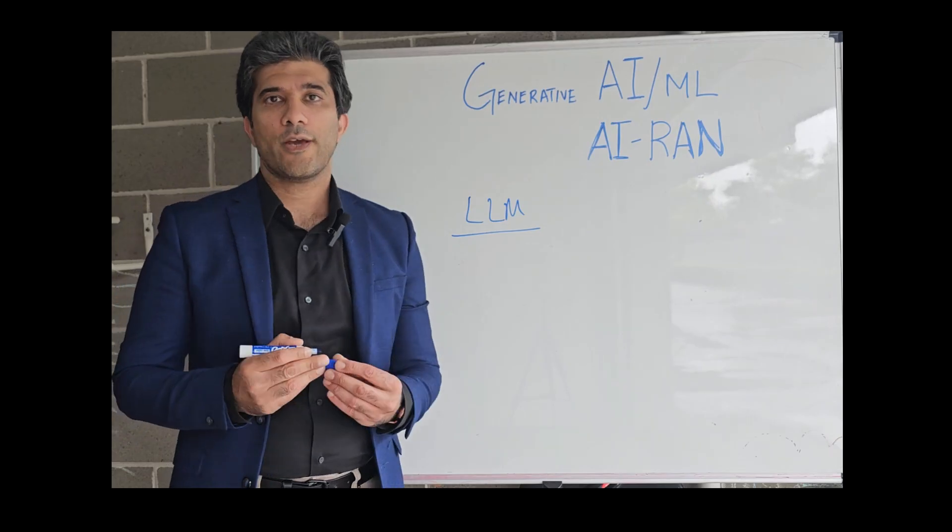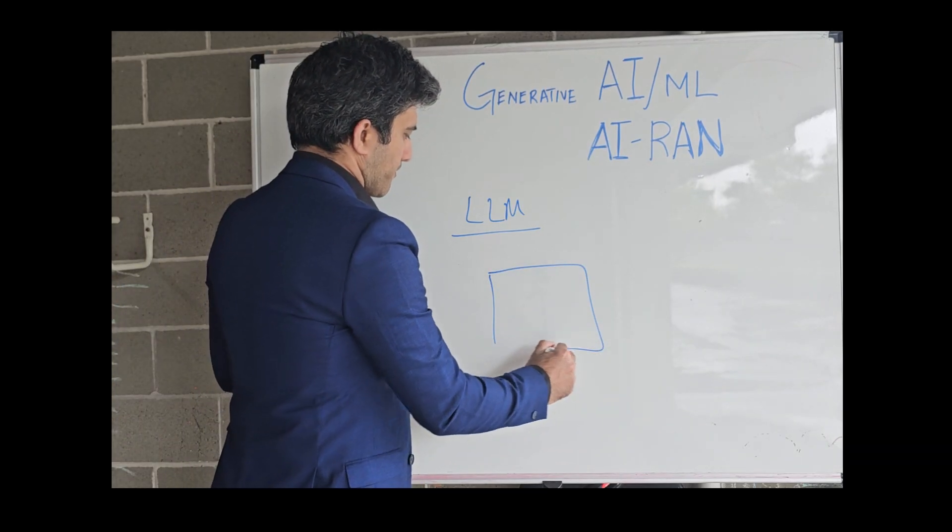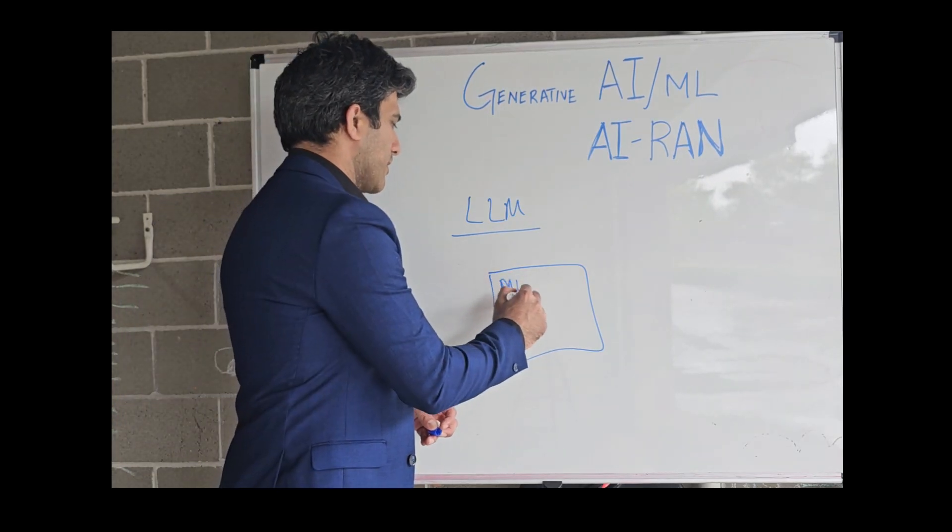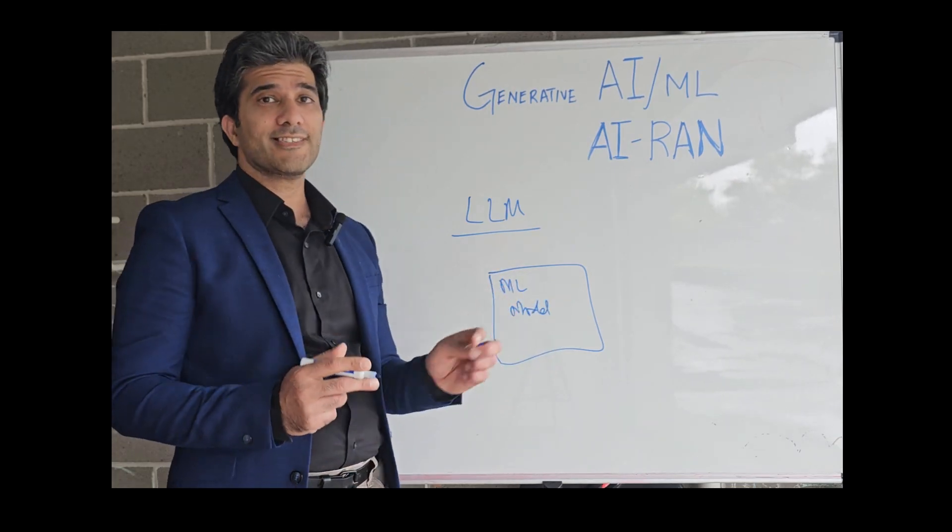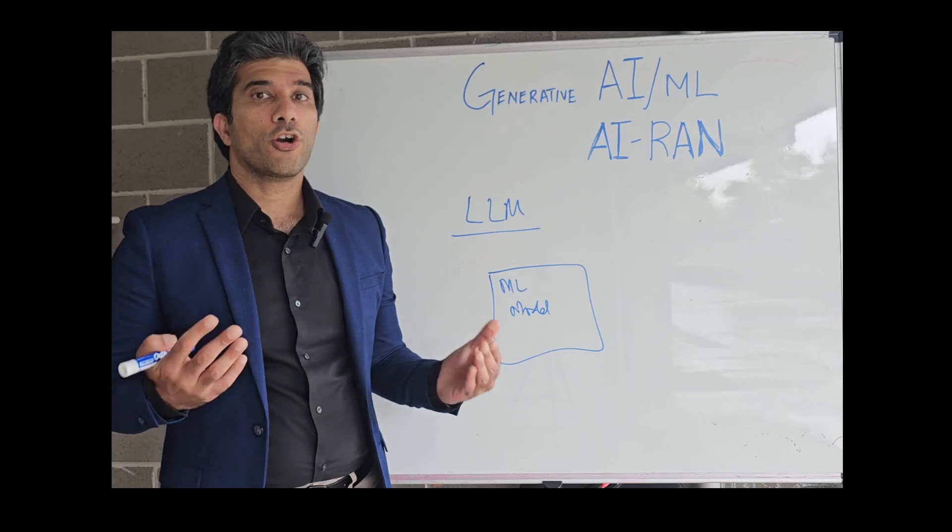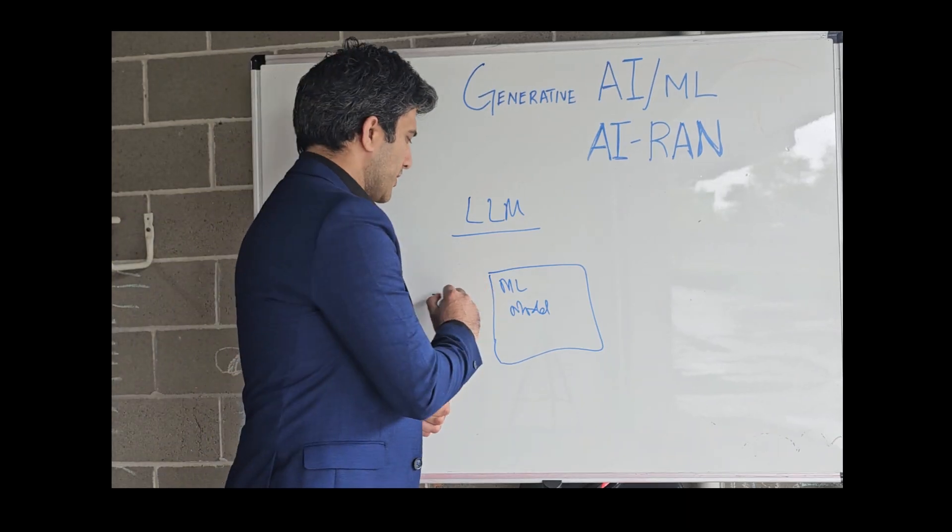It's basically called LLM. LLM is your large language models. So what happens is that we have a machine learning model. This model is actually trained based on unstructured data and a lot of data. You're talking about terabytes of data this model is trained onto.